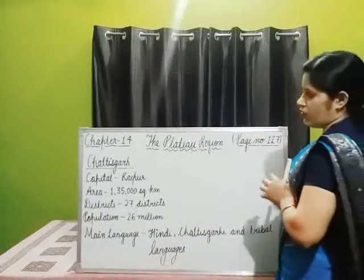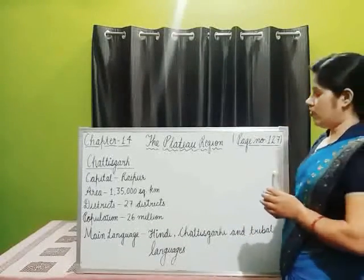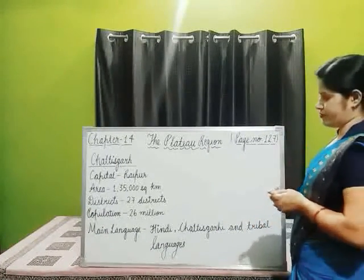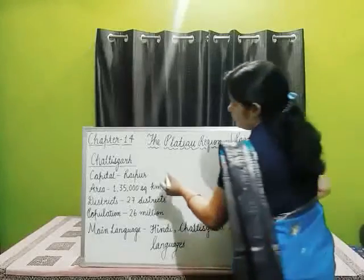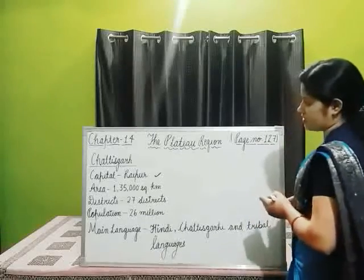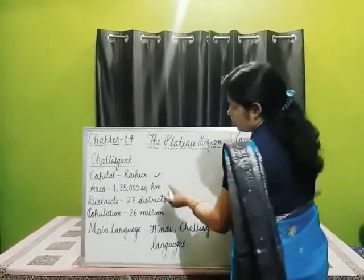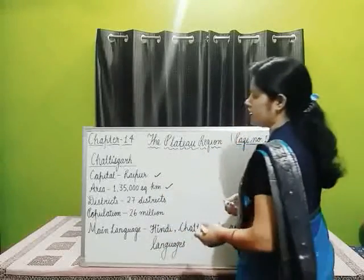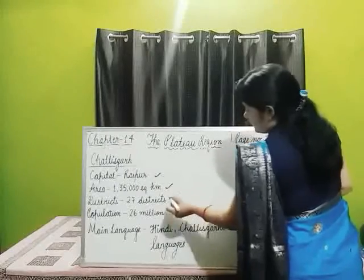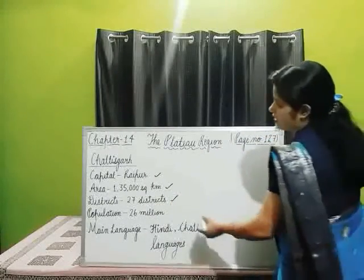Today we will know about the state Chhattisgarh. The main features of the state Chhattisgarh: the capital is Raipur, the area is 135,000 square kilometers, there are 27 districts, and the population is near about 26 million.